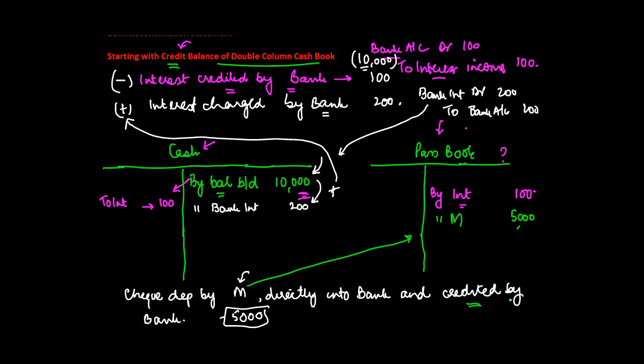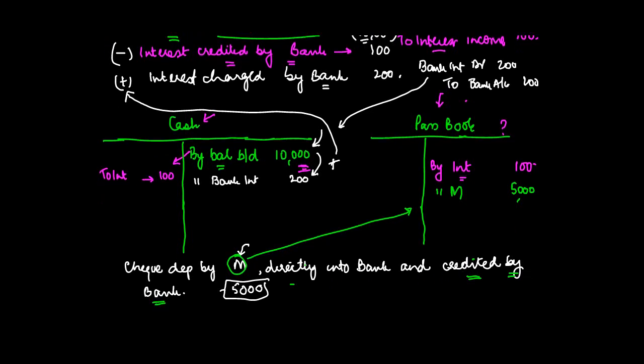This means what? Effectively if the bank credits by M, when it says and credited by the bank, it's not credited by us, it's credited by the bank. So effectively if you see from your perspective what is happening, you're getting money from M. I mean even if this credit and all these things were not given, what is the entry which you would have passed if M would have paid you the money? You would have said bank account debit to M.